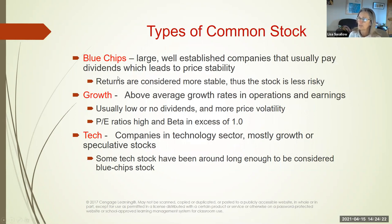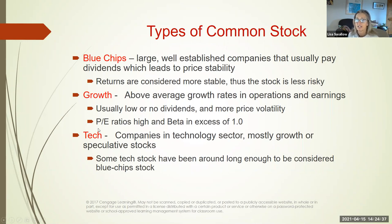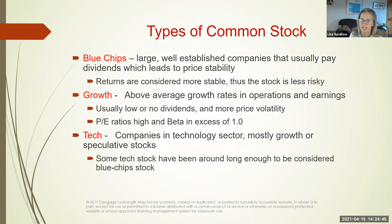Blue chip stocks: returns are stable, stocks are less risky. Growth stocks have high PE ratios and betas in excess of 1.0 — what does that mean?